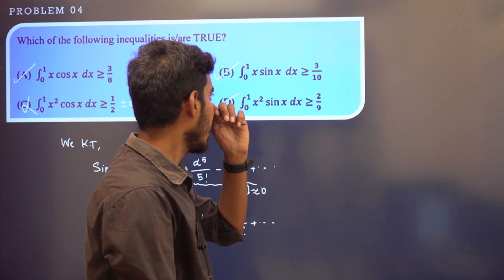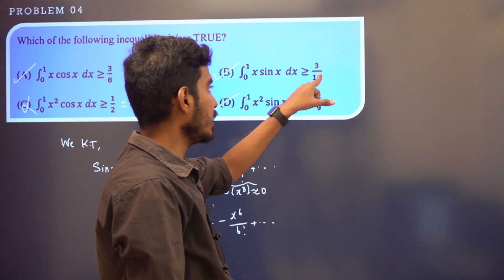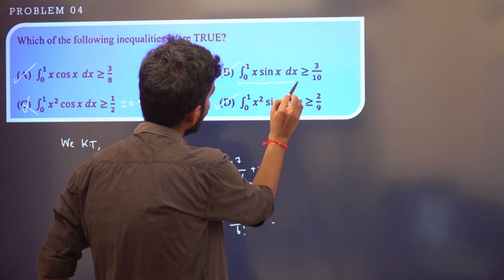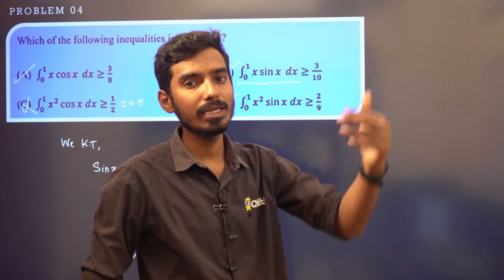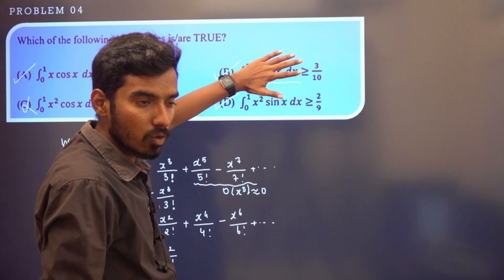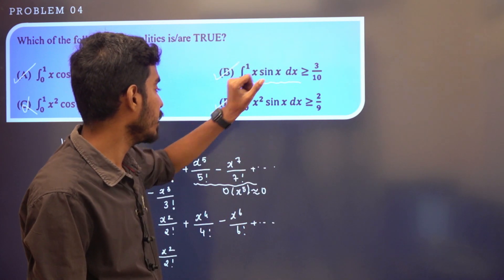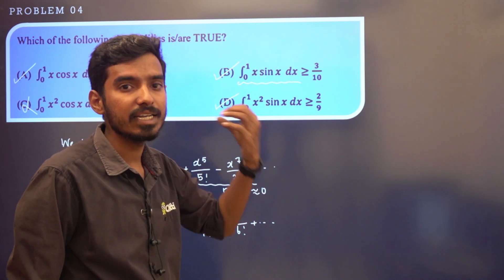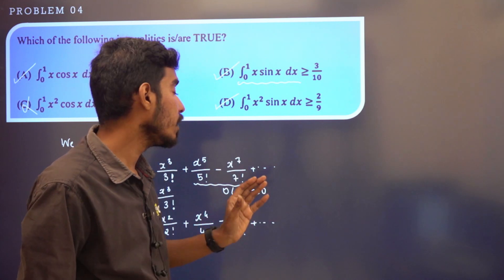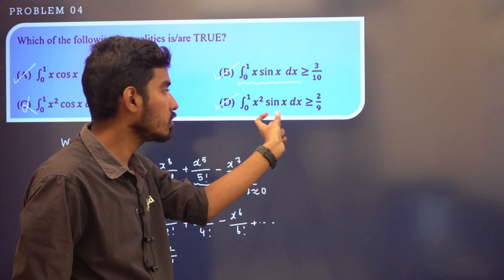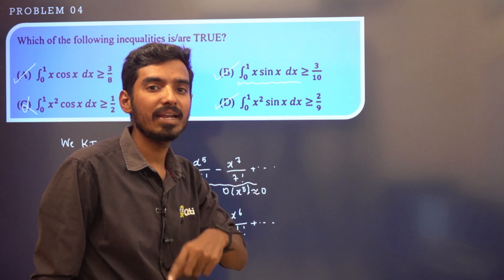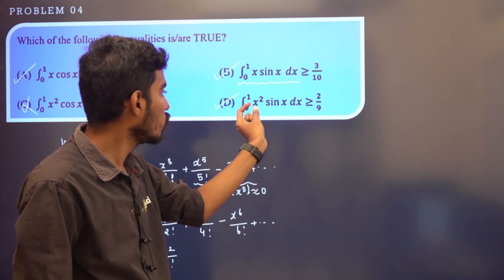This is a very easy problem. Note that 3/10 is the minimum possible value for option B. You could also verify by integrating directly using integration by parts: ∫ u dv = uv − ∫ v du, with u = x² and dv = sin(x) dx.